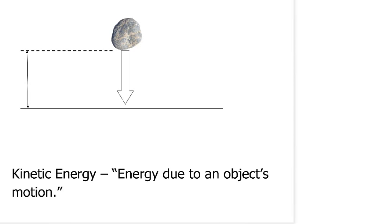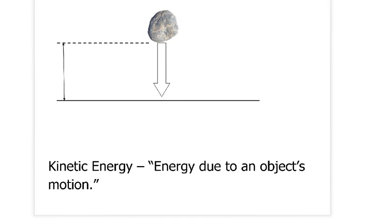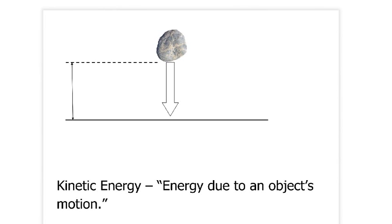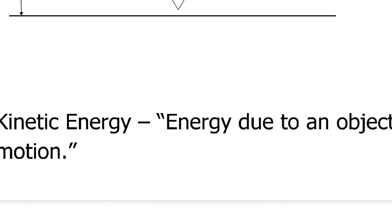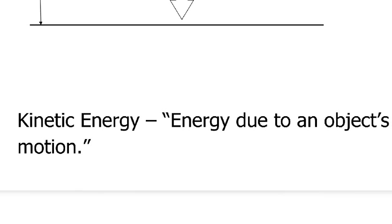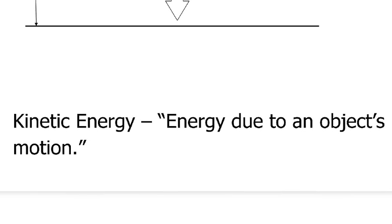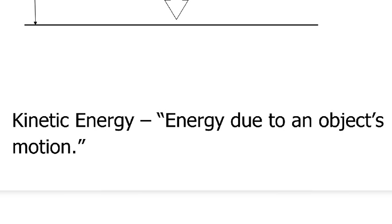So when gravitational potential energy is released or converted, basically by dropping something, then that energy turns into kinetic energy. And kinetic energy, in terms of falling, would be the energy due to the object's motion, or its falling, right?